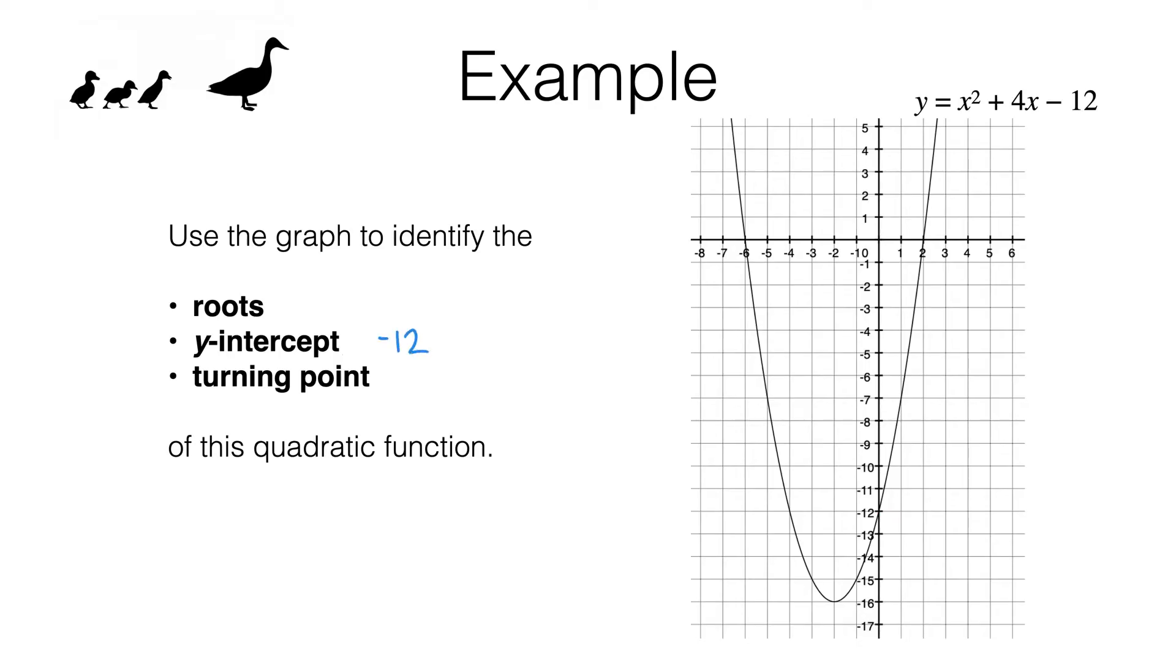Notice we just want the number, we want the y-coordinate negative 12. We don't want to write down the actual coordinates of the point which would be zero, negative 12. That's the coordinates of the point, we don't want that, we just want the y-coordinate. So we've found our y-intercept.